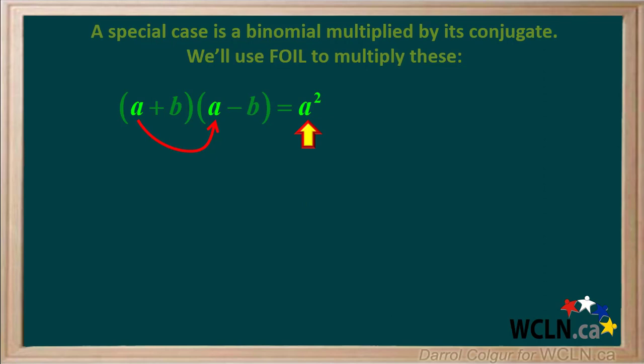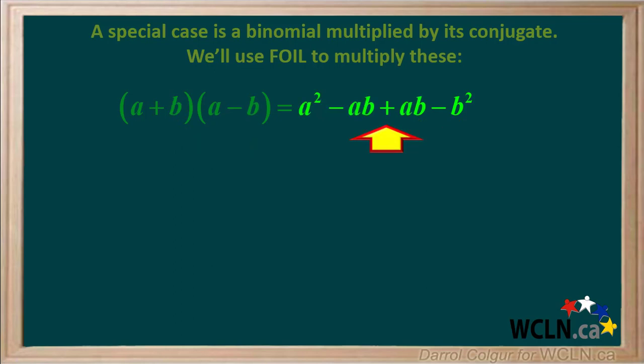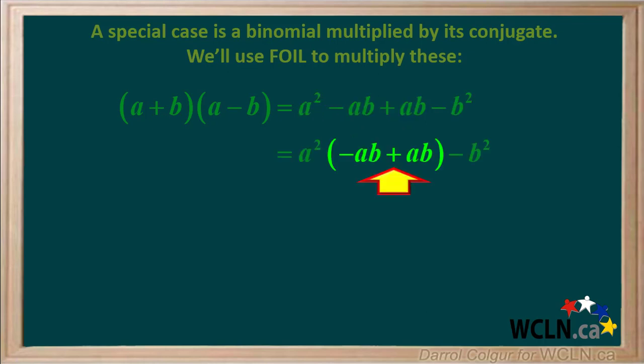We multiply the first terms a times a to give us a squared. Next we multiply the outside terms a times negative b to give us negative ab. Now we multiply the inside terms b times a to give us positive ba, which is the same as ab. Lastly we multiply the last terms b times negative b to give us negative b squared. So we are left with a squared minus ab plus ab minus b squared.